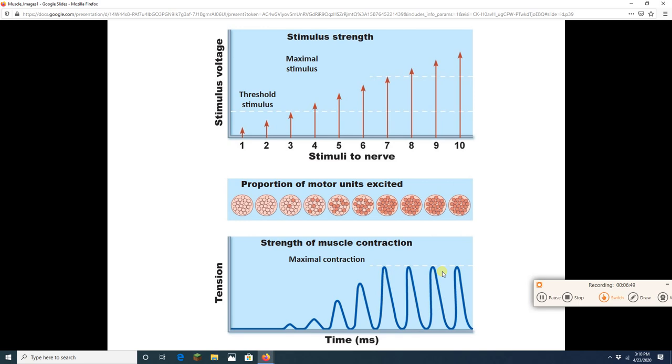One of the early adaptations to weightlifting is you get better at using more motor units. One of the reasons why strength increases early on in weight training isn't because your muscles actually got any stronger. It's because your body gets better at recruiting more motor units.